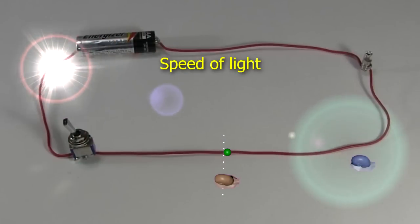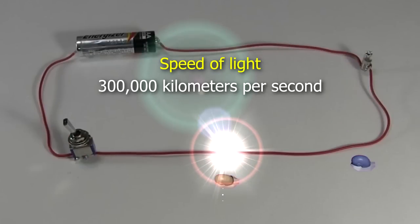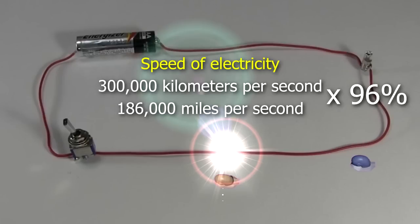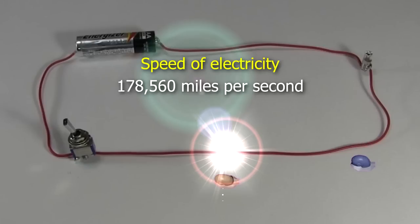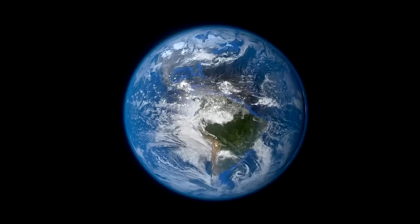But doesn't electricity move at the speed of light? The speed of light is around 300,000 kilometers per second, or 186,000 miles per second. Actually, in an unshielded copper wire like this one, electricity moves at around 96% the speed of light, so 178,560 miles per second. At that speed, ignoring other losses, electricity could circle the globe over seven times in just one second.